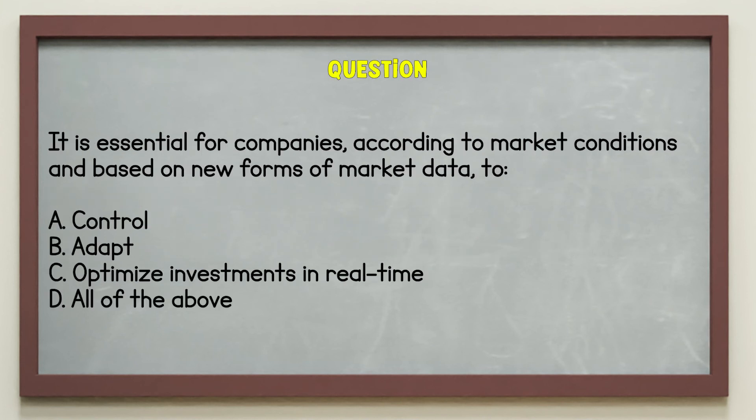Question: it is essential for companies, according to market conditions and based on new forms of market data, to — A, control; B, adopt; C, optimize investments in real time; D, all of the above.